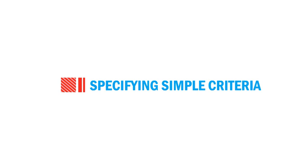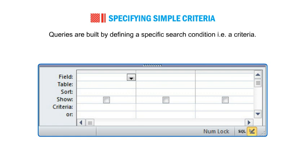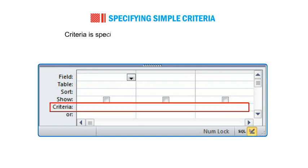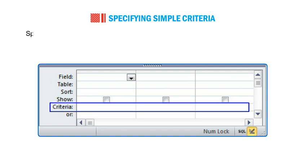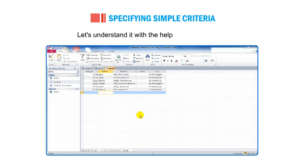Let us understand how to specify simple criteria. Queries are built by defining a specific search condition — that is, a criteria. Criteria is specified in the criteria row of the design grid. Specify the criteria value and the data will be filtered accordingly in the query output.